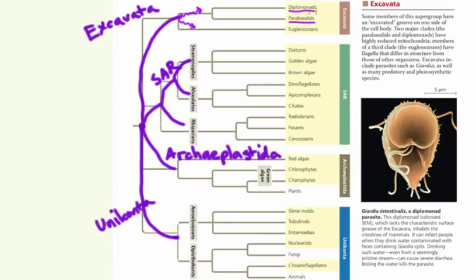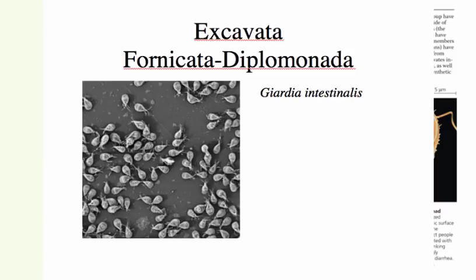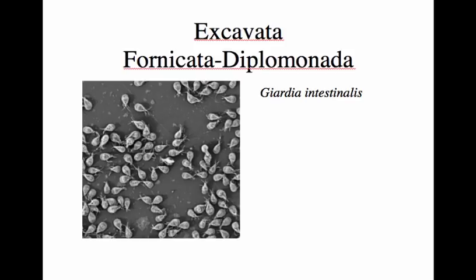Sharing this sub-limb of the excavata with the parabacillates are the diplomonads, which are also anaerobic with highly-reduced mitochondria. Our example is Giardia, an organism you should be aware of because it is widespread in the United States, carried by wild animals as well as companion animals like dogs and cats, and commonly contracted by hikers who are careless about treating stream water. This parasite can pass from a zoonotic reservoir like a beaver or a deer to humans via fecally-contaminated water, and the main symptom is severe diarrhea—often occurring when someone is a long hike away from the trailhead.